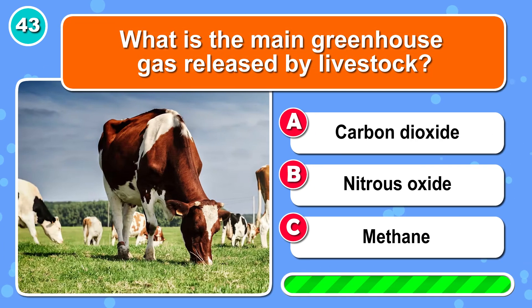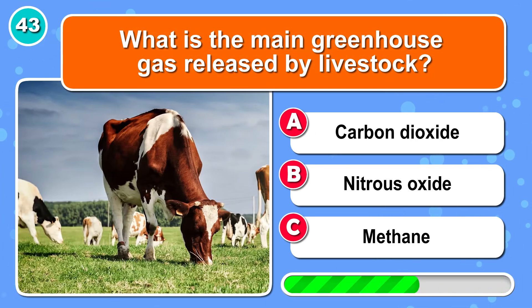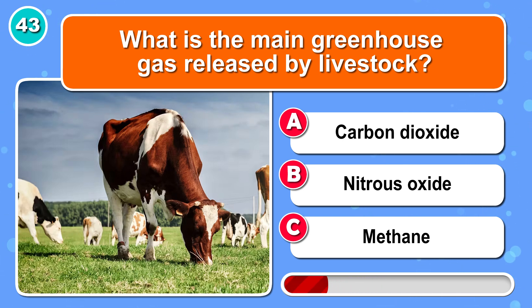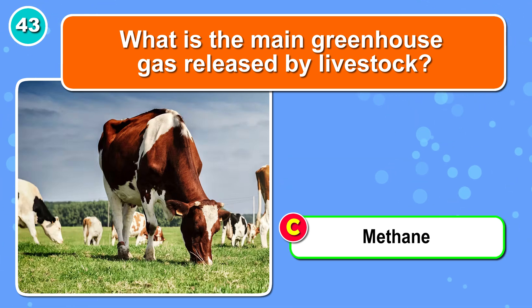What is the main greenhouse gas released by livestock? Correct, it's C: methane.